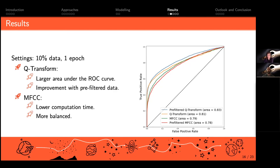As you can see on the right hand side, the Q-transform is the blue and orange line. Those approaches performed better than the MFCC. It had a larger area under the ROC curve, and also with the pre-filtered data we could reach an improvement.